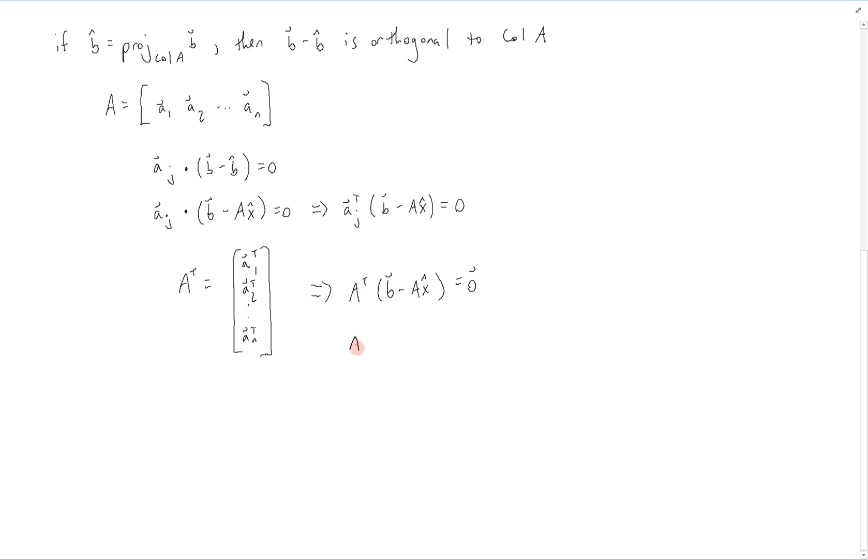By multiplying this out, we have that A transpose b minus A transpose A x hat is equal to 0. This is just by distributing the A transpose. And then subtracting this from both sides, we're going to get that A transpose A x hat is equal to A transpose b.